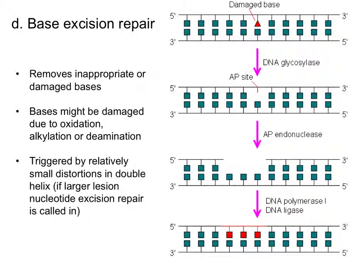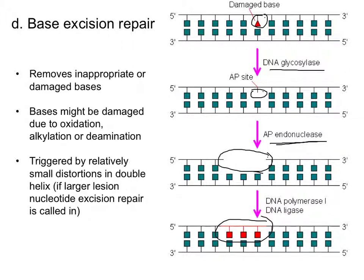In base excision repair, enzymes called DNA glycosylases and AP endonucleases are used. A DNA glycosylase removes a damaged base, leaving a headless nucleotide. An AP endonuclease then removes a section of DNA in that area. DNA polymerase I and DNA ligase treat it as a gap requiring synthesis and phosphodiester bonding, filling it in using the complementary strand as template — yielding an error-free result.